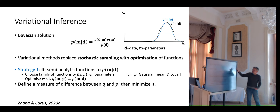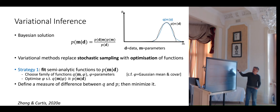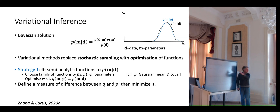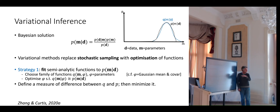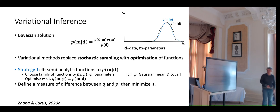Obviously, to do this, we need a measure of the difference between the two distributions. We need some way to measure that difference, and then minimize it — that's how we get updates to the parameters.